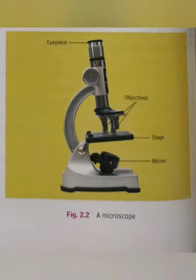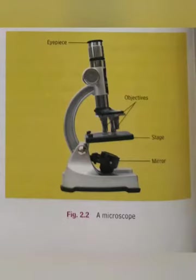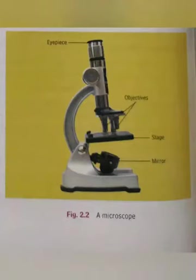The important parts of a microscope are the eyepiece, objectives, stage and mirror. We keep the specimen — the thing we wish to observe — on the stage. We look through the eyepiece, which is a lens. There are two or more other lenses called objectives. The lenses in a microscope work like a magnifying glass, making the specimen appear larger.